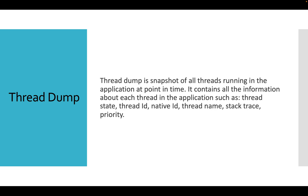Then we have thread dumps, which is a snapshot of all the threads running in the application. One application runs multiple threads simultaneously so it can work on multiple activities at the same time. Thread dump gives us a picture of how many threads are open, whether it is within the limit or going beyond the limit, and whether it is taking too many resources. You can see thread state, thread ID, native ID, thread name, stack trace, and priority — these aspects help us analyze whether threads are running at an optimum level and completing within time.